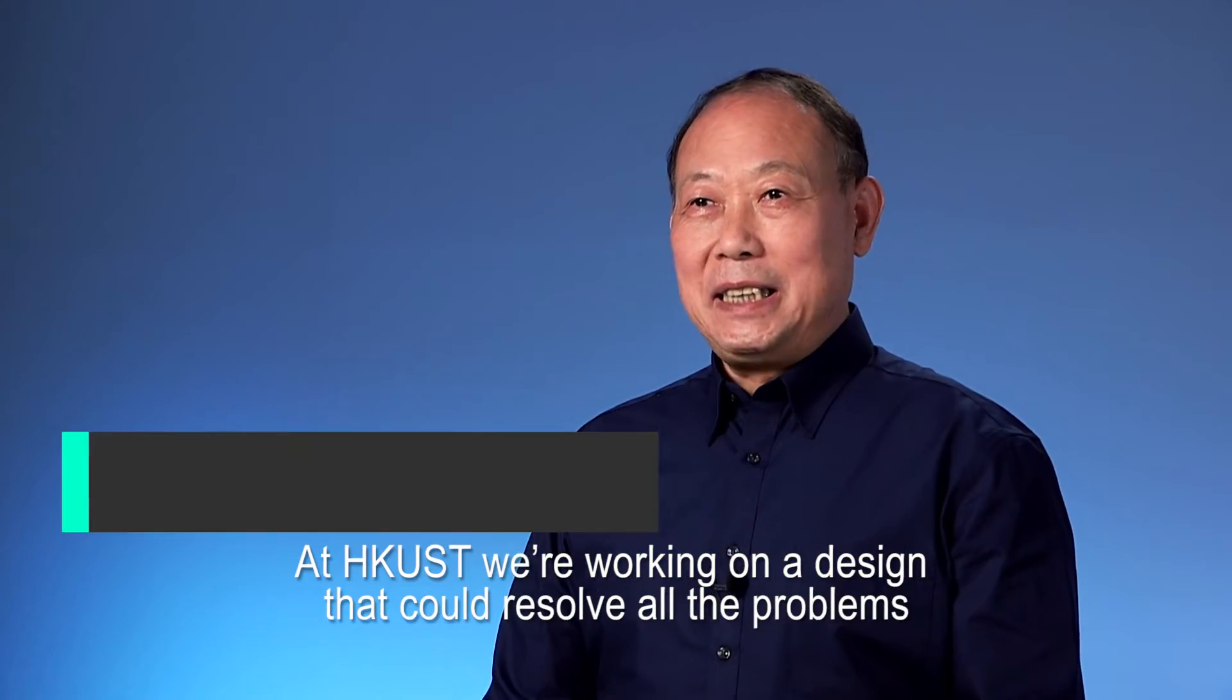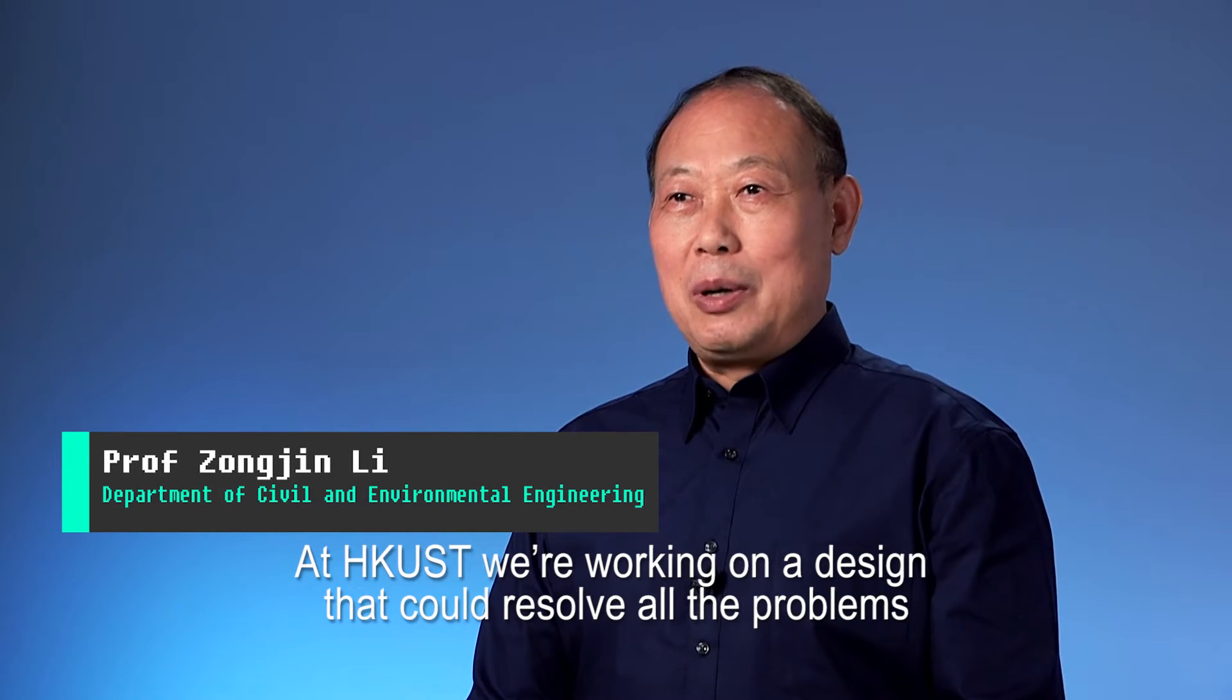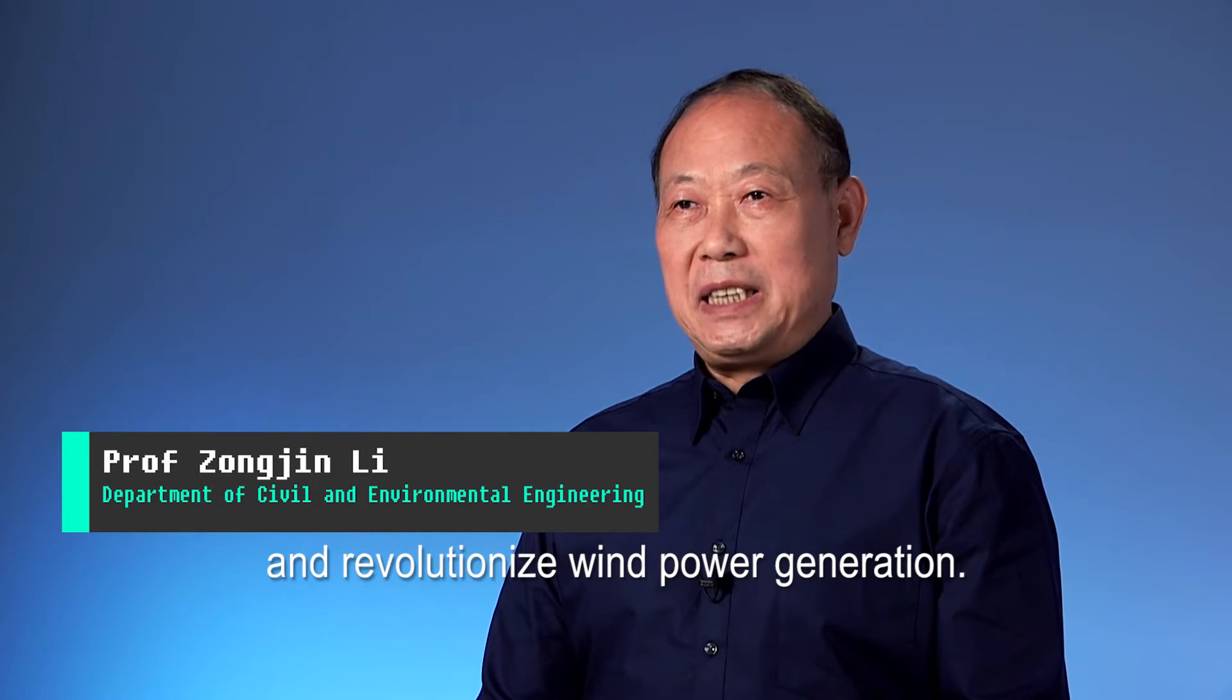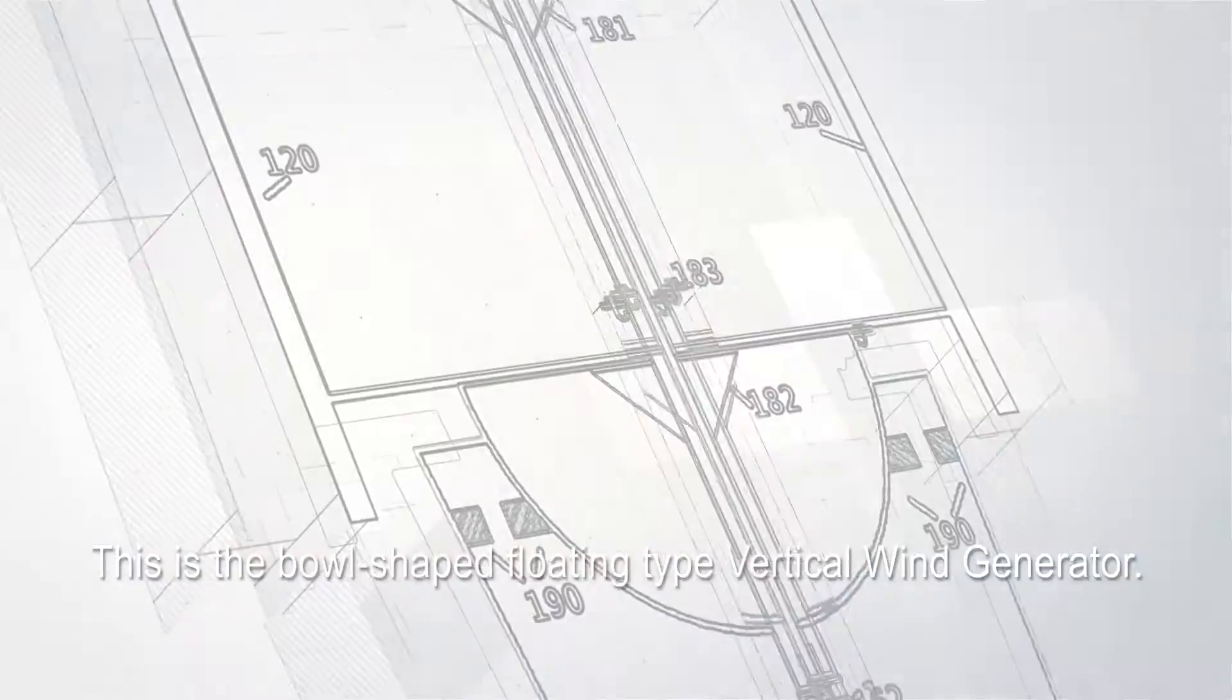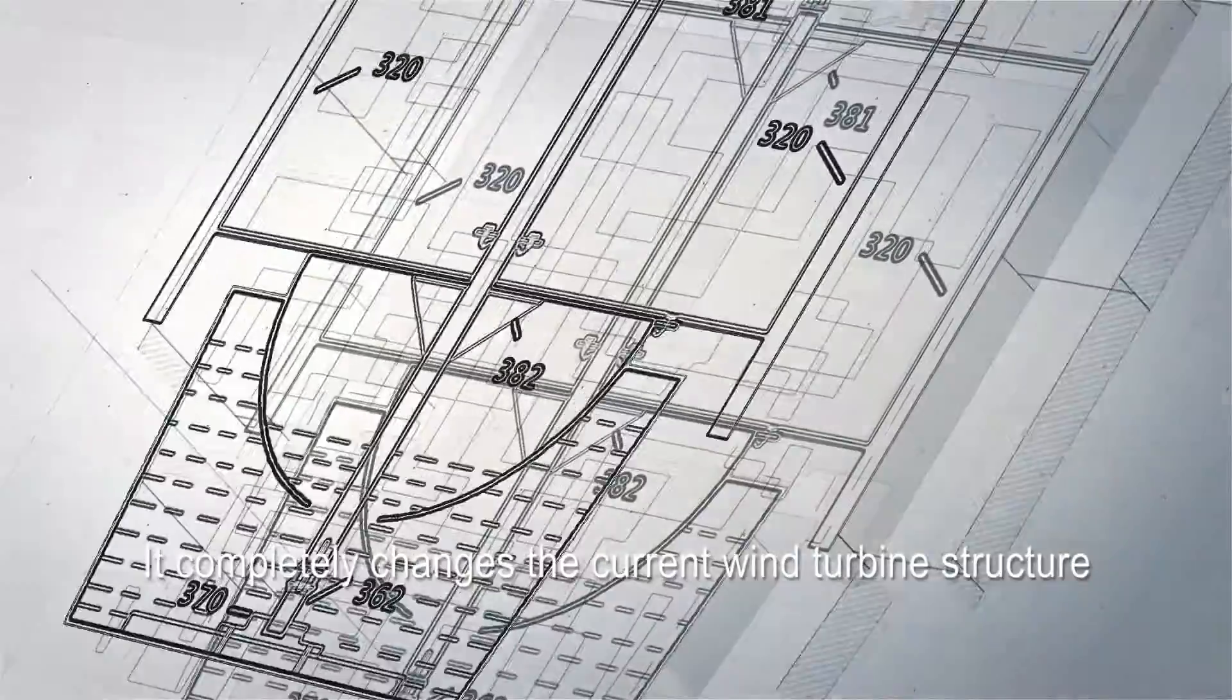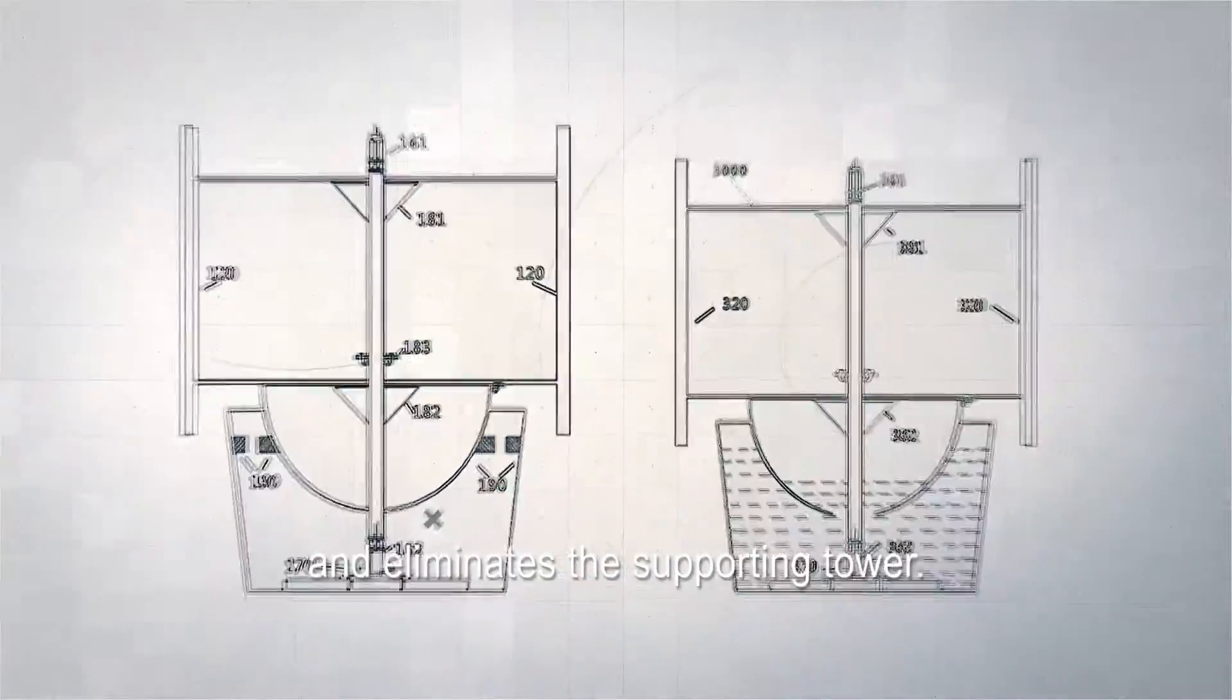At HKUST, we are working on a design that could resolve all the problems and revolutionize wind power generation. This is the bowl-shaped floating-type vertical wind generator. It completely changes the current wind turbine structure and eliminates the supporting tower.